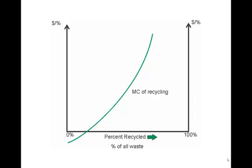The very first units of waste coming out of a household might have a negative cost of recycling, because, for example, you might be able to take your clothing to a resale shop or get a tax refund by taking stuff to Goodwill. So the marginal cost of recycling is negative at first, but then increases fairly rapidly because, at some level, getting stuff to the recycling bin or finding somebody who will actually take it can be quite expensive.